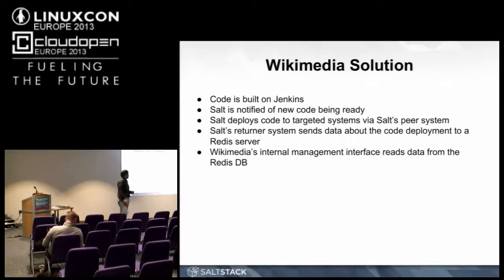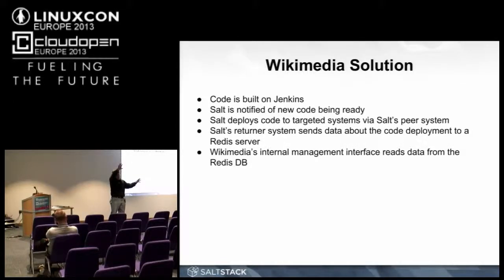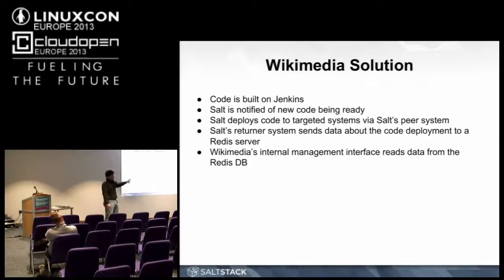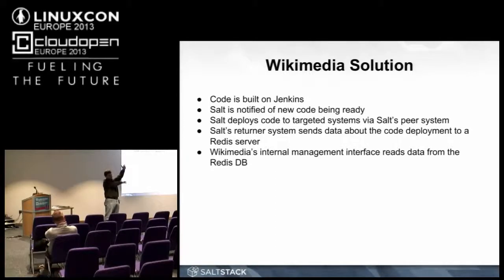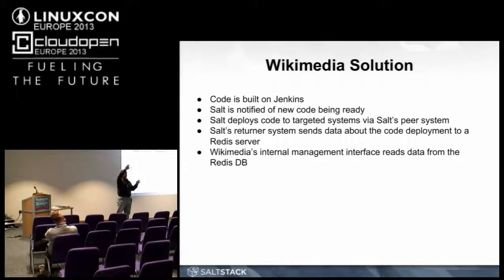In the Wikimedia situation, what they're doing is they have a salt master and minions, and out on one of their minions sits the Jenkins server. Every time that Jenkins server executes or finishes a build which has been tagged in such a way to invoke a code deployment, they use salt's peer system. This is the ability for minions to send a message up to the master and then request that somebody else in the infrastructure execute on that message and return the information back to that minion. The peer system allows them to have a plug into Jenkins that fires off a command to the salt master to say, hey, let the web tier know that we have fresh code for them.